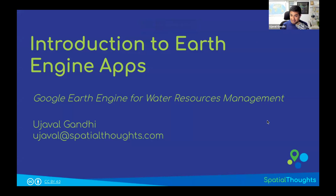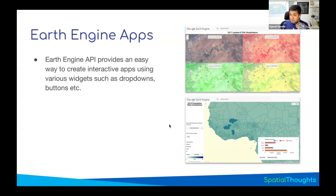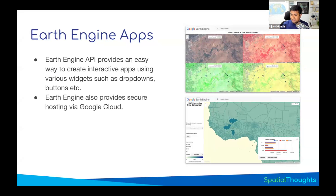Earth Engine makes it very easy for analysts. You just write code using a few widgets, put together an app, publish it on Google Cloud for free, and you'll have a link you can share. Earth Engine apps are built using the Earth Engine API, which is only available for the JavaScript version because your apps run in the browser. It provides widgets like drop-down selectors that you can use to build and host apps on Google Cloud.